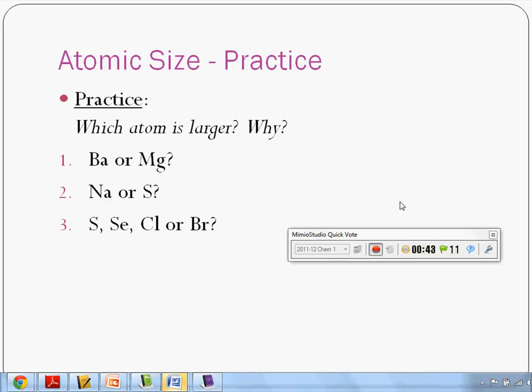Okay, so barium is A, magnesium is B. Don't talk to anybody. Just answer the question.